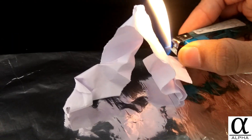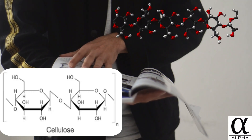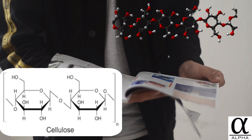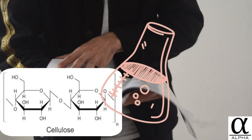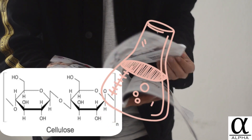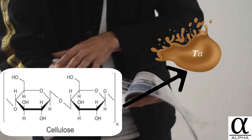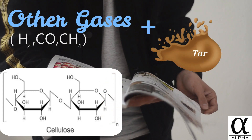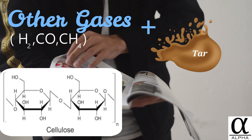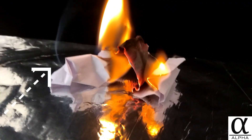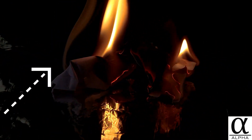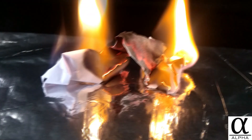Yeah, that's the truth. Let me explain. Paper is made up of cellulose. When I heat it, the cellulose starts to undergo a chemical reaction with itself and it turns into a tar and some gases. The gases are mostly hydrogen, carbon monoxide, and other hydrocarbons. And these gases are flammable — so that's what actually catches fire when you light paper on fire.